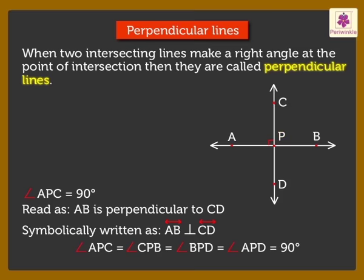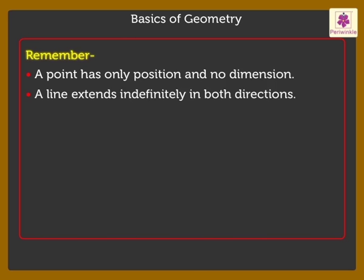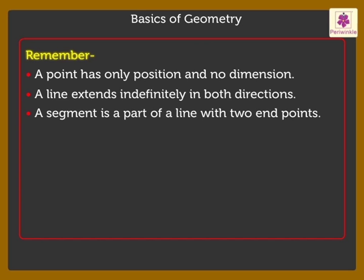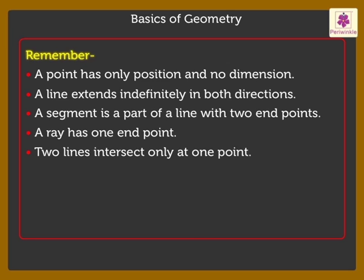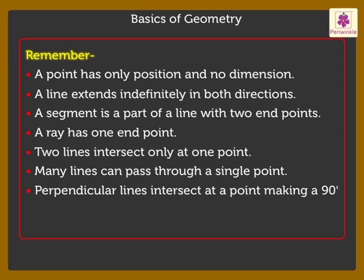Kids, remember, a point has only position and no dimension. A line extends indefinitely in both directions. A segment is a part of a line with two endpoints. A ray has one endpoint. Two lines intersect only at one point. Many lines can pass through a single point. Perpendicular lines intersect at a point making a 90 degrees angle. Parallel lines never meet.